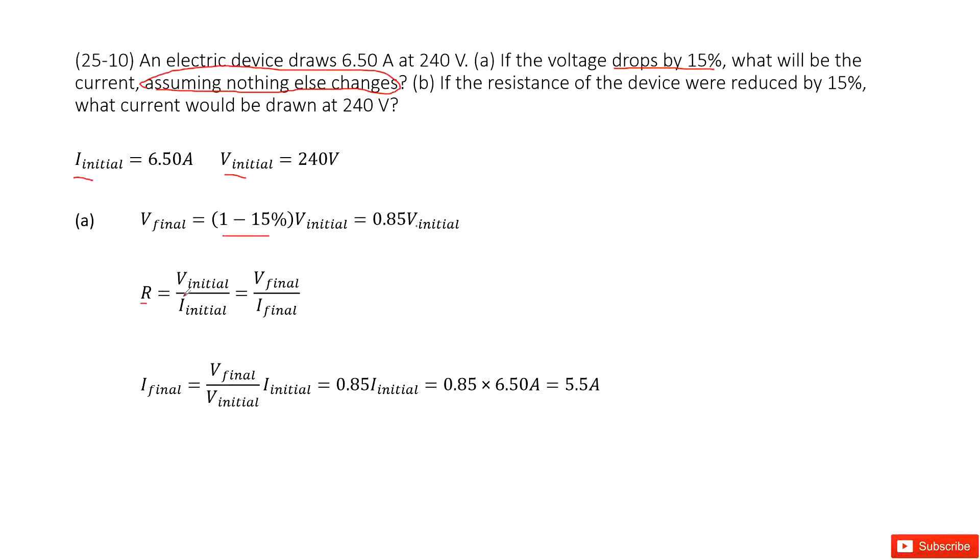So that means the initial voltage divided by initial current equals the resistance. And also the final voltage divided by final current equals this resistance, so they're equal.